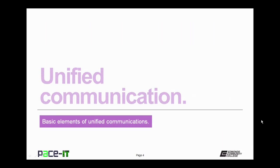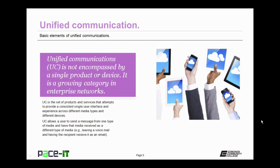I'll begin this session by talking about unified communication. Unified communications is not encompassed by a single product or device — it's a growing category in the enterprise network. Unified communication, or UC, is the set of products and services that attempts to provide a consistent single user interface and experience across different media types and different devices. UC allows a user to send a message from one type of media, such as an email, and have that media received as a different type of media — that email could become a text message or a voicemail.